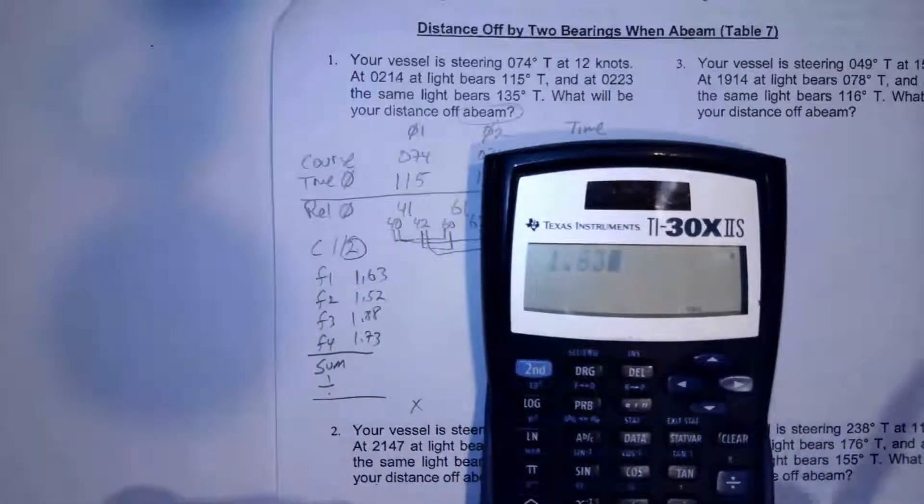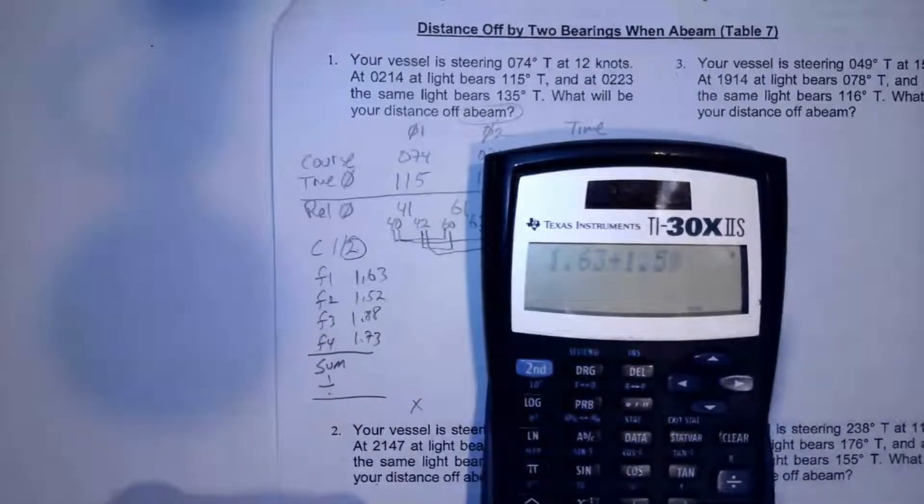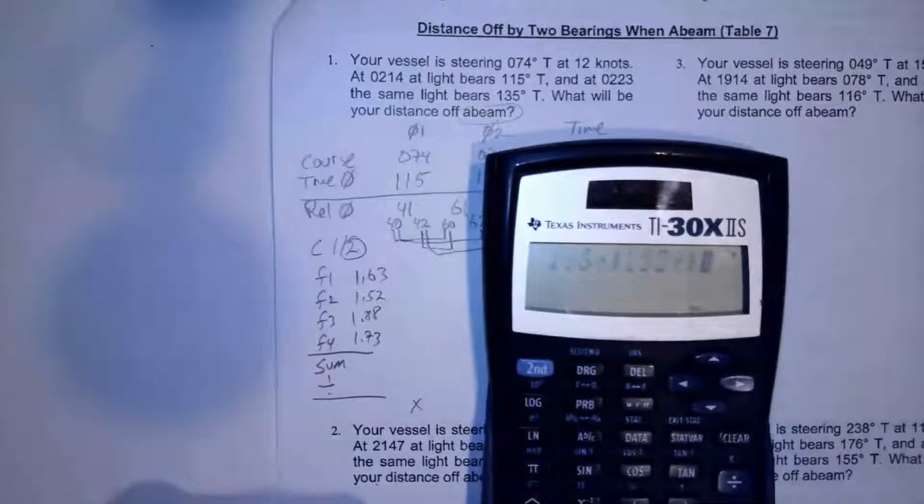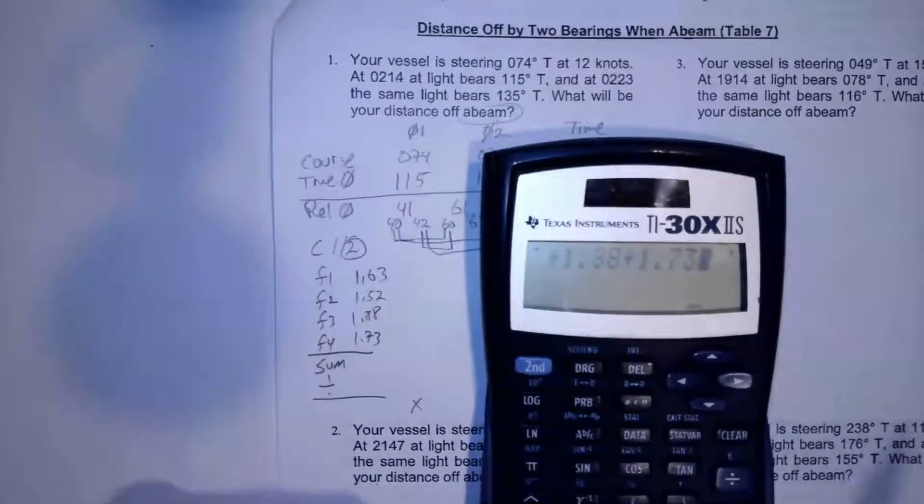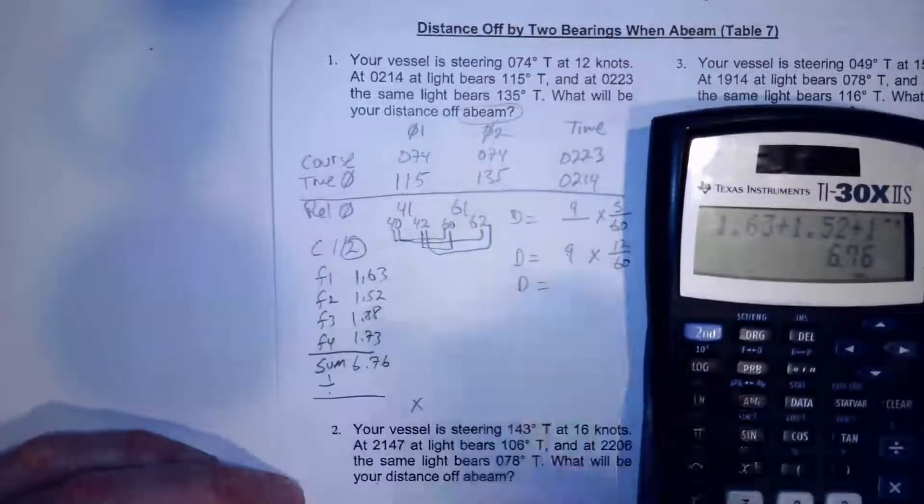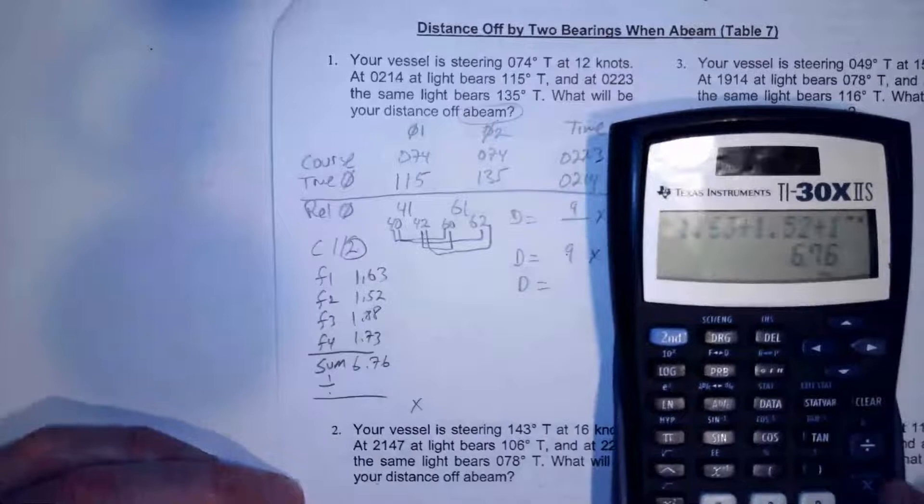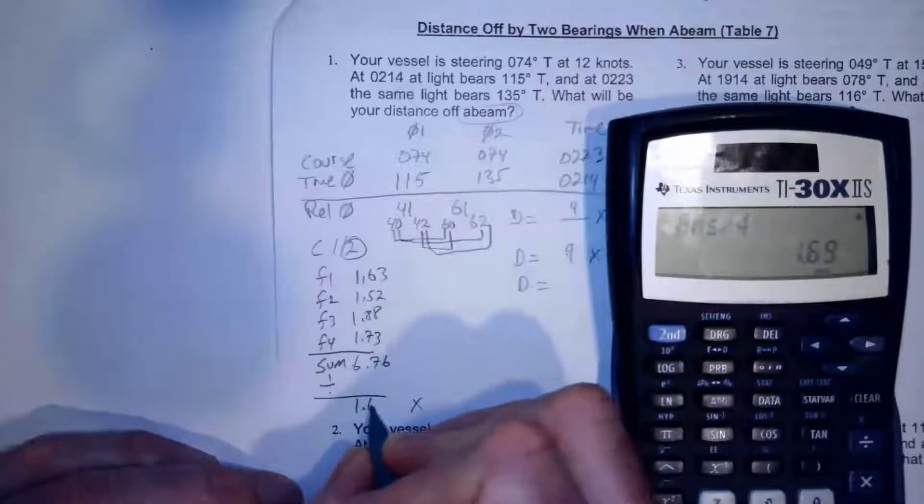1.63 plus 1.52 plus 1.88 plus 1.73 equals 6.76. And then we'll divide that by four, divide that by four. And that gives me 1.69.